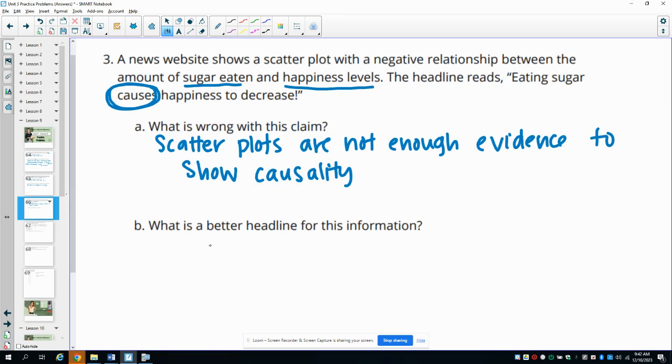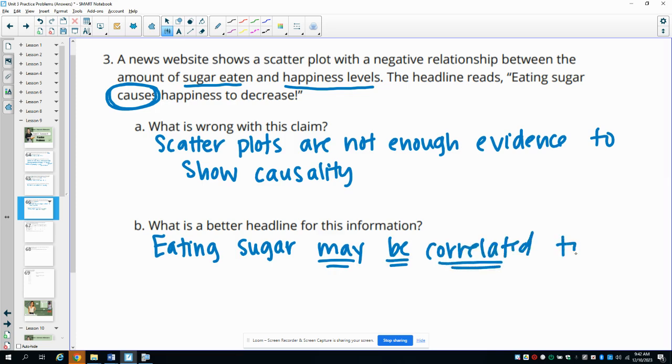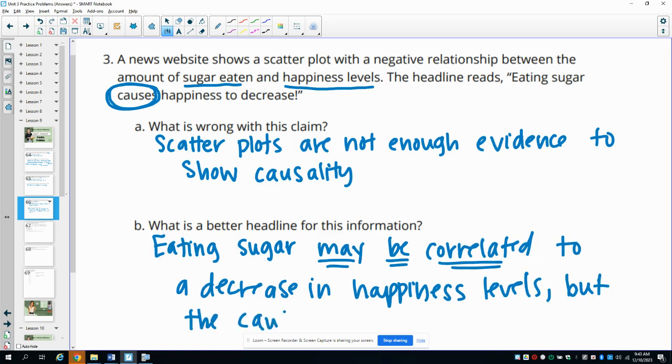Just that they happen to be correlated for some reason, not that they're causing each other to happen, but that there's some type of correlation somewhere. So a better headline might be to say something like, eating sugar may be correlated to a decrease in happiness levels, but the cause is unknown. So we're not sure why that's happening. And it doesn't suggest that sugar is the cause of that necessarily. Still could be.